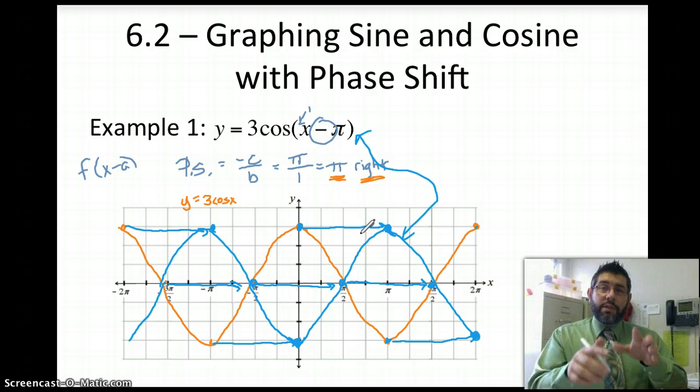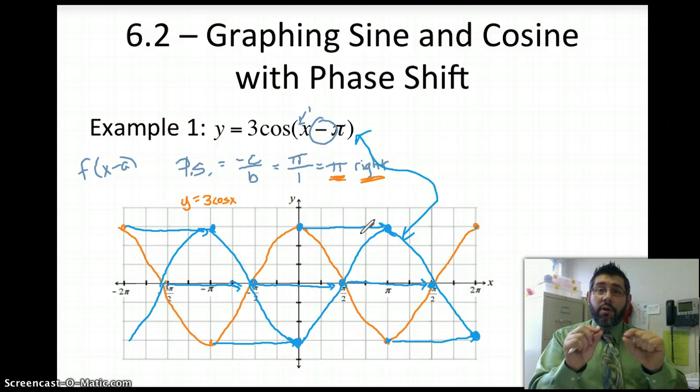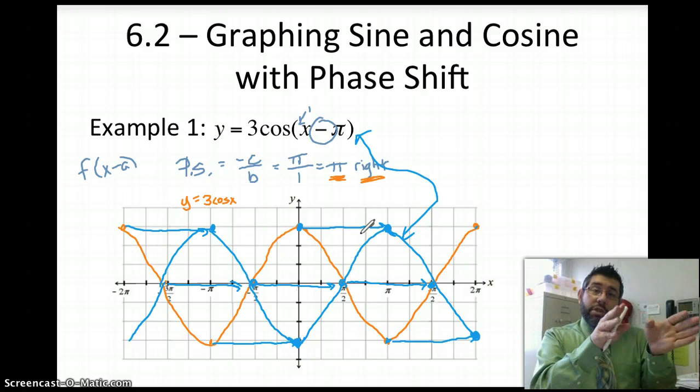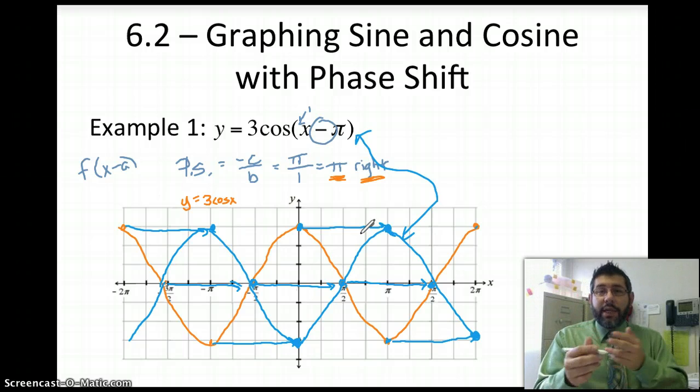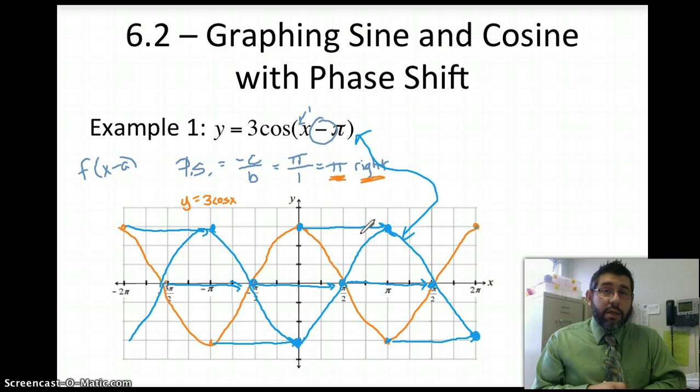And this will be our graph of our function. Okay, so all you have to remember is that what you're doing is you just need to take those points, those major points, the maximums, the minimums, and you just shift it over. Okay, let's take a look at another example that has a period change as well as a phase shift.